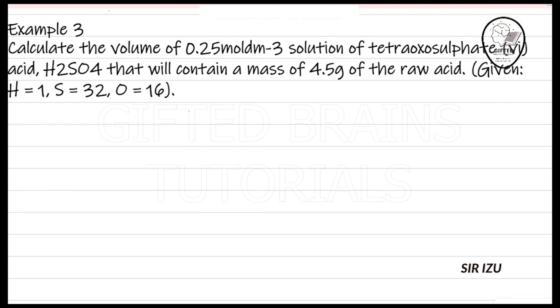Example 3: Calculate the volume of 0.25 mole per dm³ solution. If it's a solution and I'm to get my volume, I first of all write the relationship between mole and volume in the solution. We have that mole equals concentration multiplied by volume. Obviously, if I make volume the subject of the formula, volume will equal concentration over mole. This is what I need to get my volume for a solution.